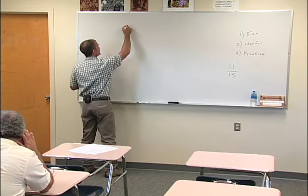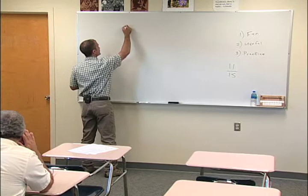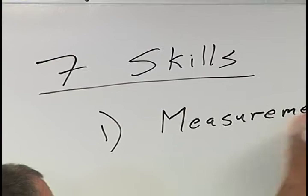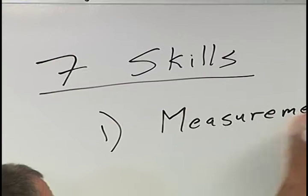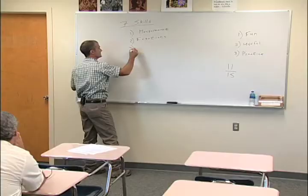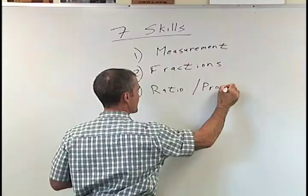And I came up with these seven skills. The first of these seven math skills is measurement. The second one is fractions, and you'll see here that they're really all the same thing. The third one is ratio, or proportion.